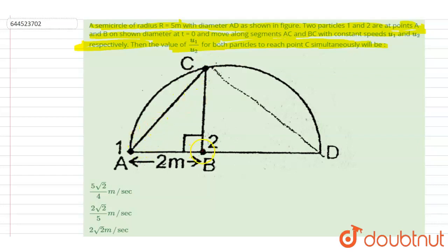If you see, the radius is 5, so this will be 10. I will write down this distance as 10 meters. And if I say this angle as theta, then you can see...